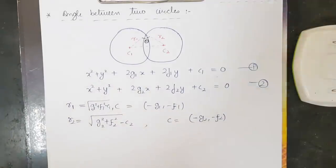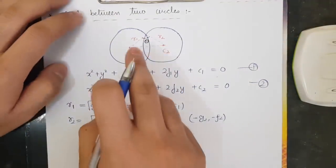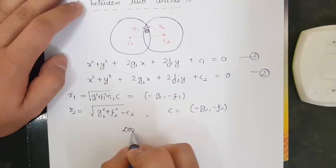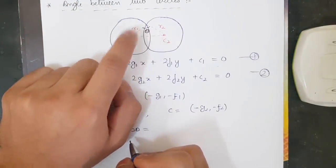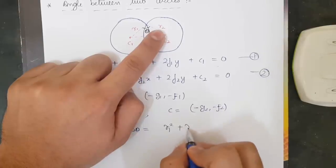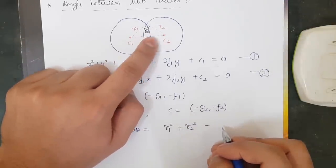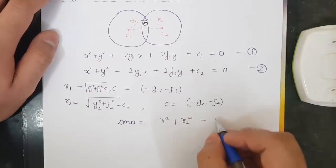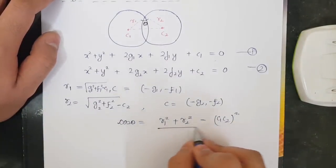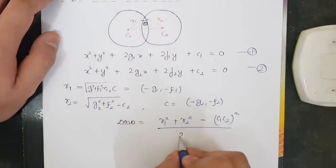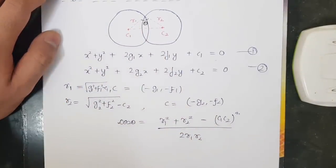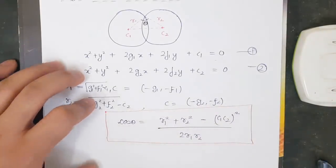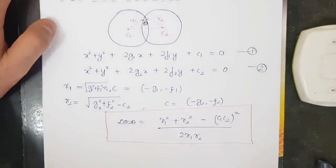Now that we have radius one, center one, radius two, and center two, the angle between the circles is found using the cosine rule. cos θ = (b² + c² − a²) / (2bc). The opposite distance is d(c1,c2), so cos θ = (r1² + r2² − d(c1,c2)²) / (2·r1·r2). This is a simple formula derived from the solution of triangles.